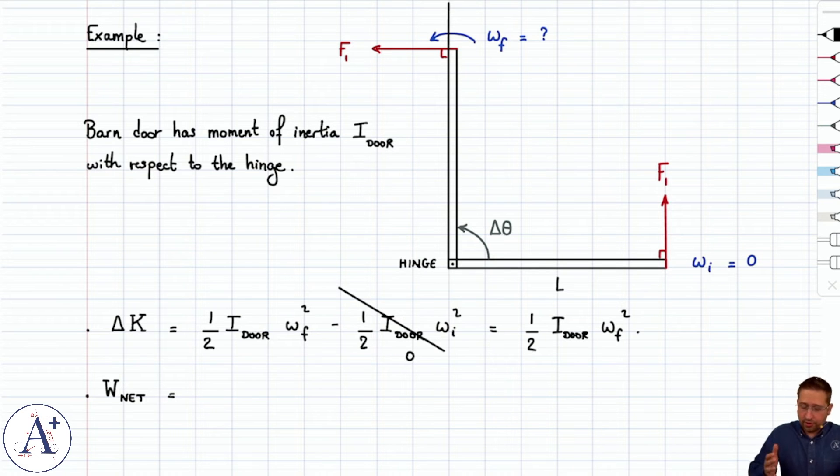Now, the only force that we have that causes a rotation about the hinge on the left-hand side is F1, and this is viewed from above, so it's the only force responsible for this motion. Work net is therefore going to be work of the torque created by F1. There's one force, therefore one torque, and therefore one work done by that torque.